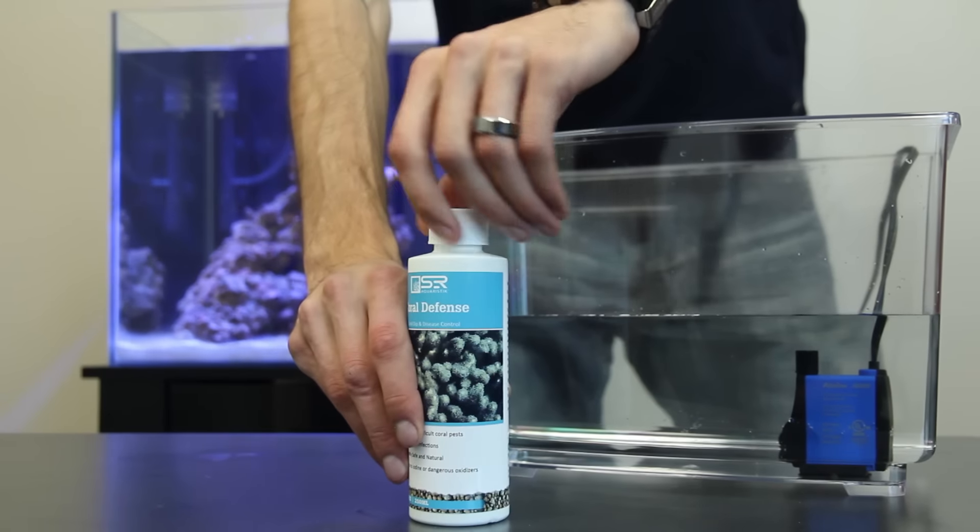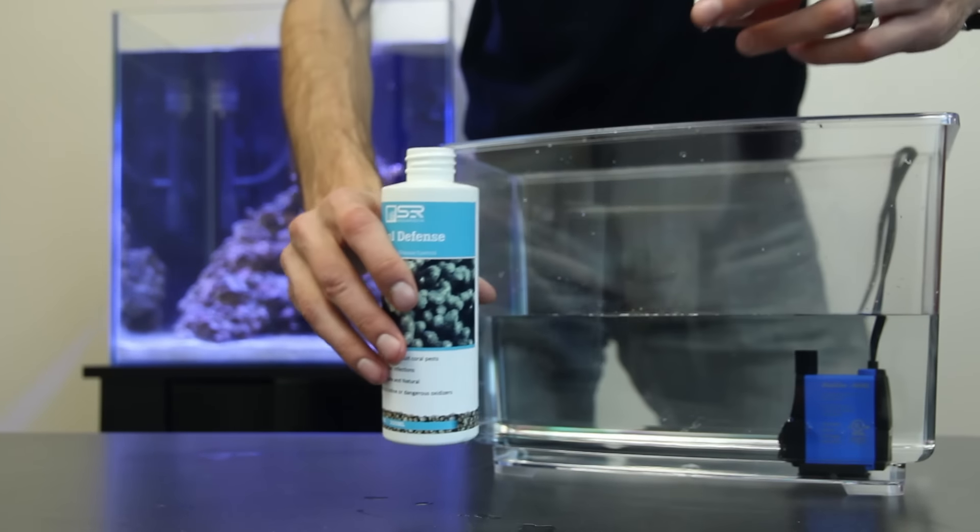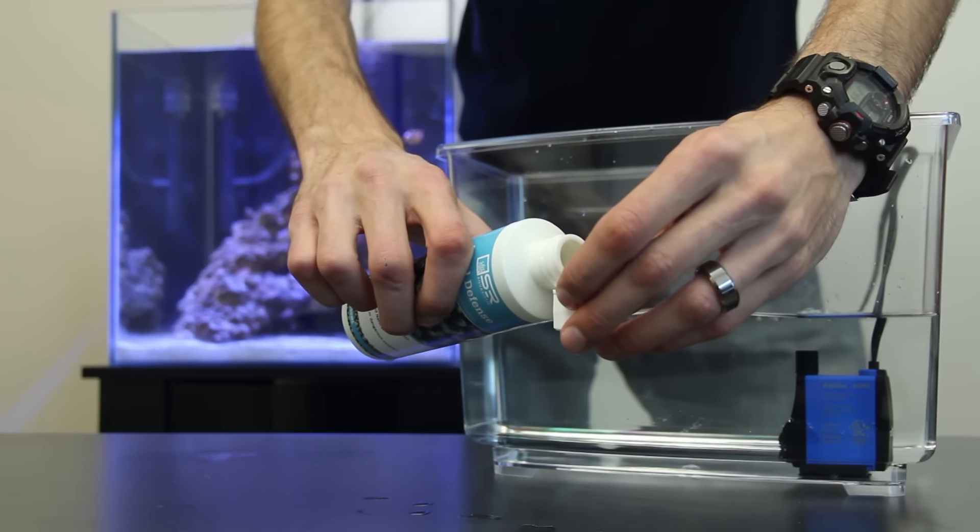Into the container add four capfuls of coral defense for every gallon of water. Use as much as you need to fully submerge the corals.